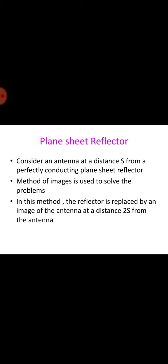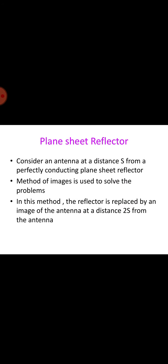Now let us have a look into the plane sheet reflector. The problem of an antenna at a distance s from the perfectly conducting plane sheet reflector of finite extent can be handled by method of images. In this method, the reflector is replaced by an image of the antenna at a distance s from the antenna. This situation is identical with the horizontal antenna above the ground. If the antenna is a lambda by 2 dipole, this reduces to the problem of W8JK antenna.